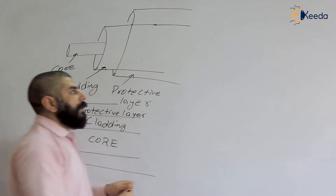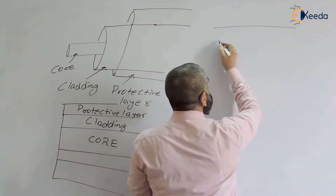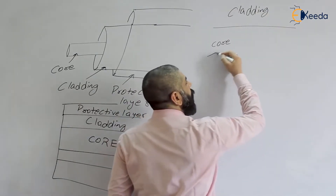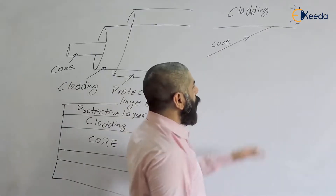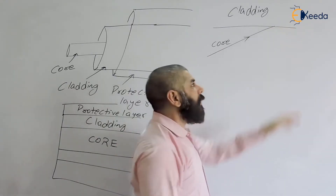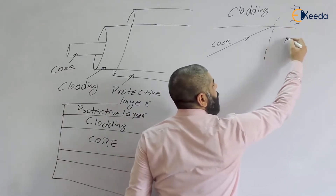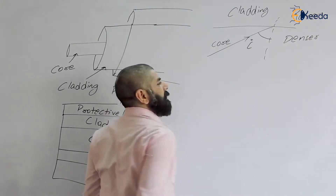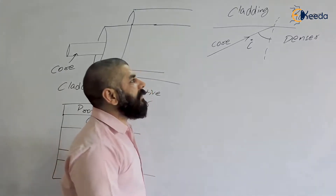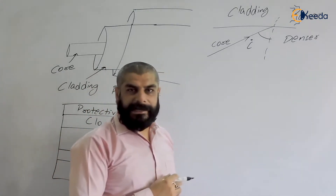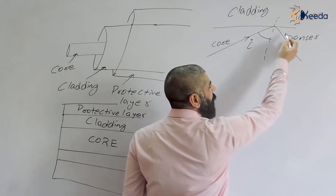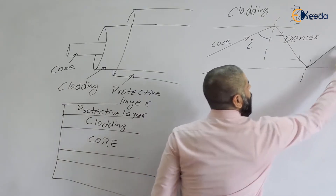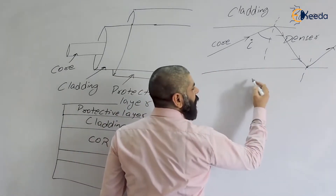Now let's see how light propagates through optical fiber. Light travels through the core. When it strikes the interface between the two materials, if the core is the denser medium and the surrounding is the rarer medium, and the angle of incidence is greater than the critical angle, then total internal reflection takes place. So light reflects back into the same medium, and at the bottom surface again total internal reflection occurs.